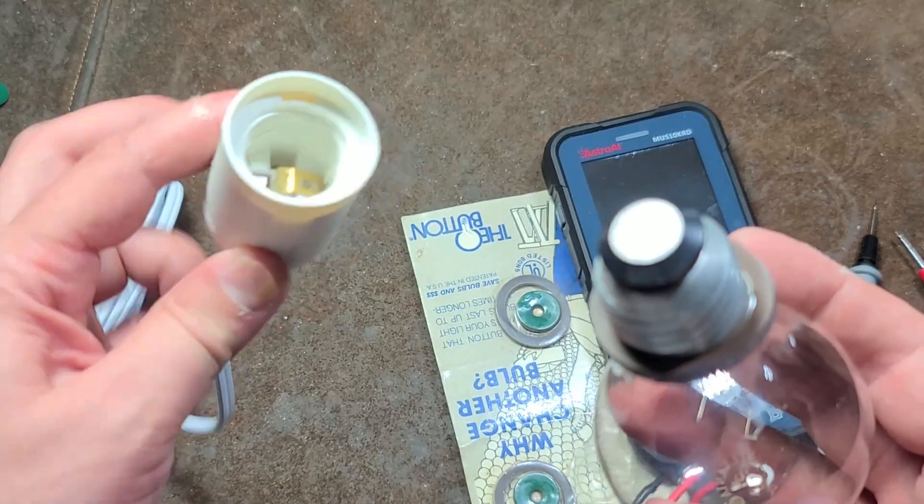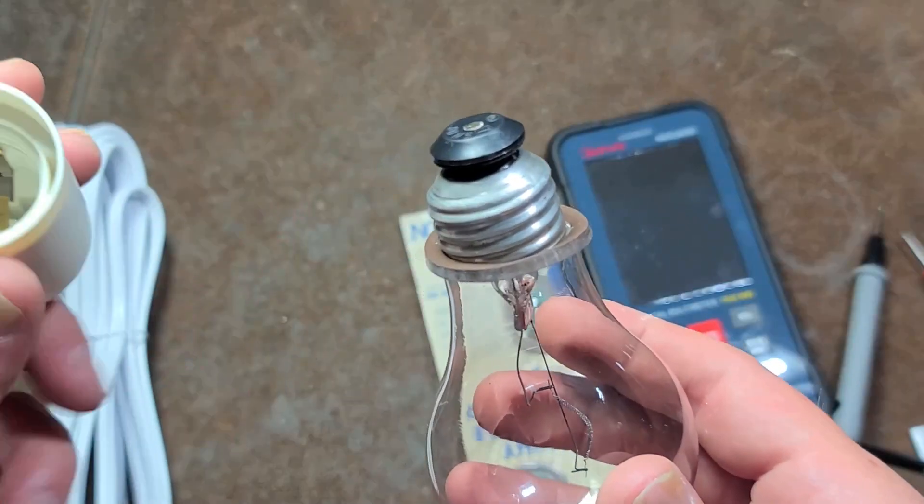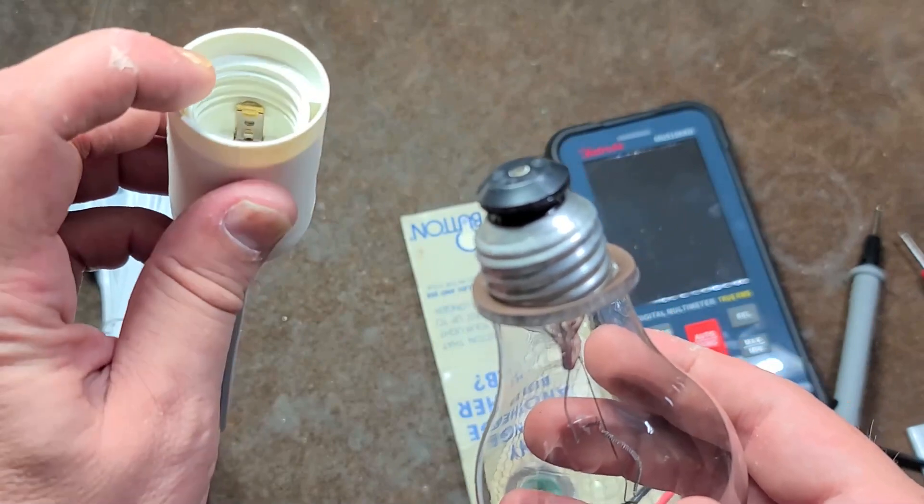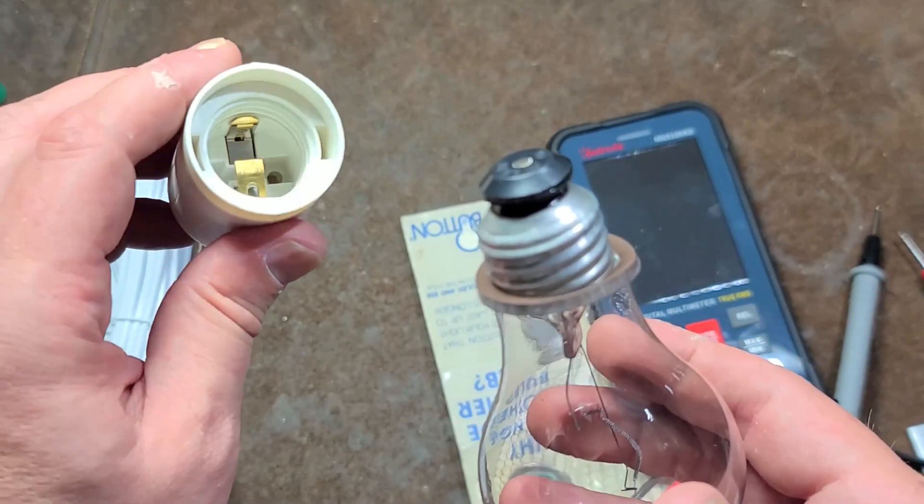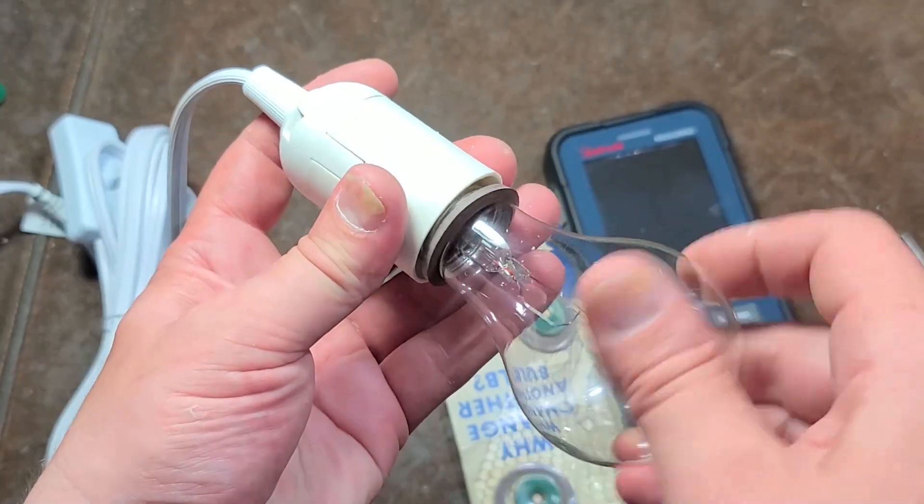I don't even know if the socket will use them. One of the issues is of course they stand off from the bottom of the bulb. Many sockets like this, the little side terminal just doesn't extend up very far, and the light bulb may not even make contact with it. And that may be the case here.